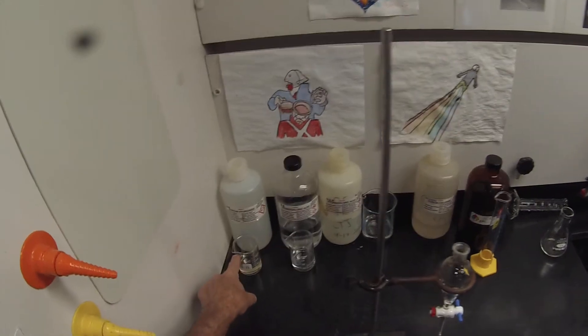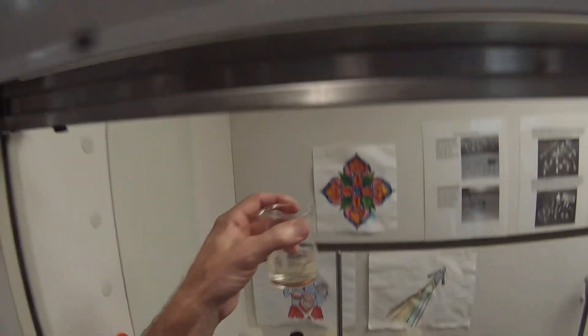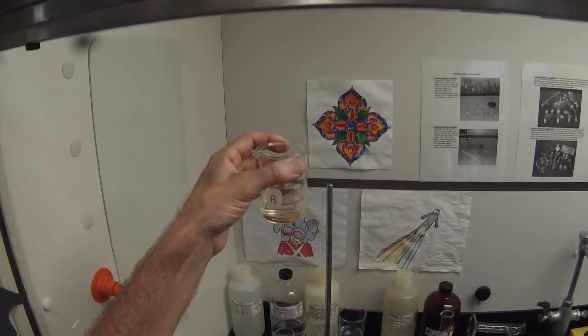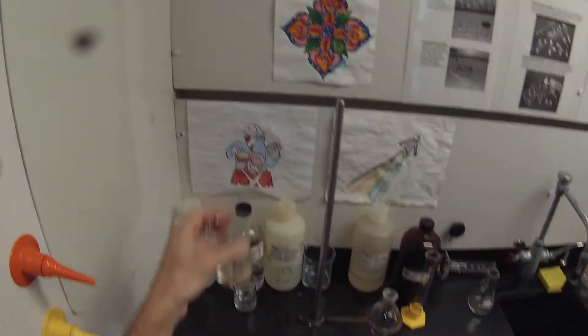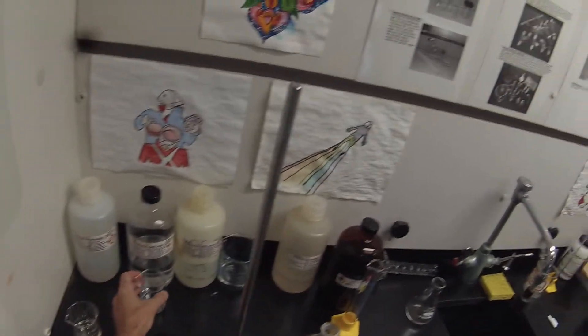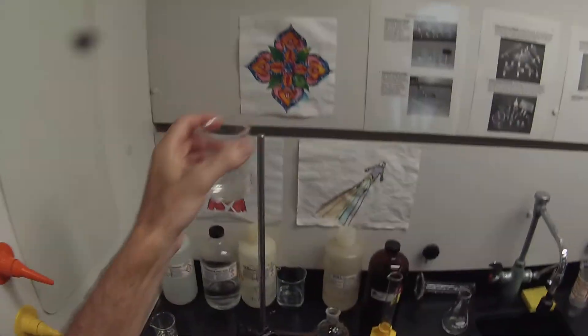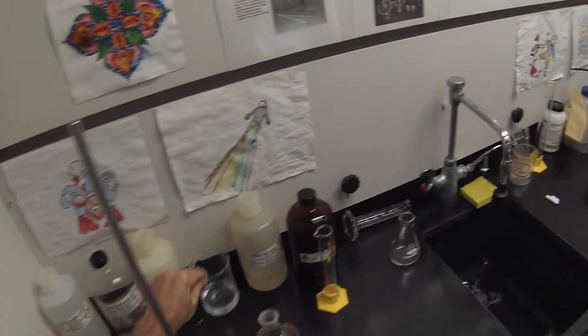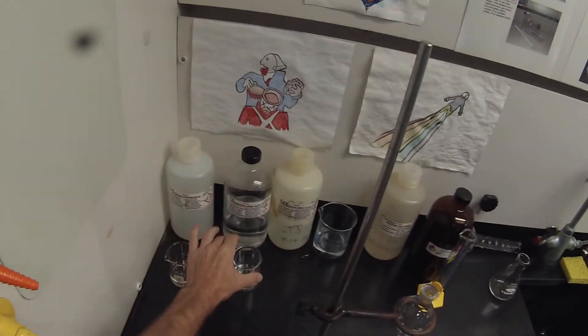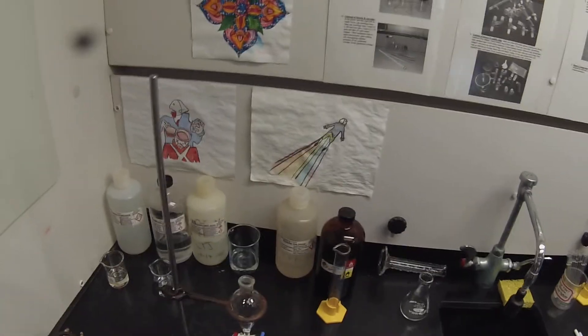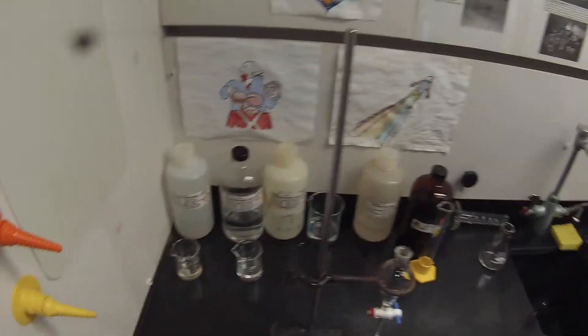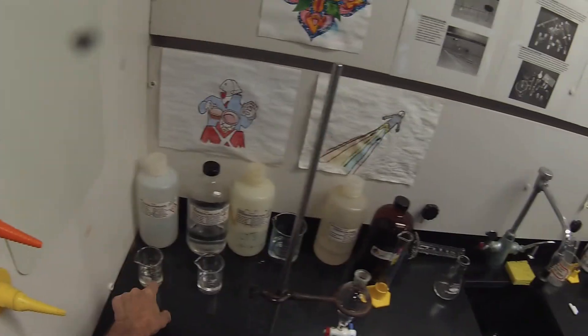We've done the extraction. We have our 30 milliliters of aqueous acid that we extracted with 0.5 molar hydrochloric acid, 2 by 15 milliliters. We've got our basic solution, 30 milliliters of the base that we extracted with the 5% sodium citrate solution. We're now going to neutralize the acidic solution with 6 molar sodium hydroxide, the basic solution with 6 molar hydrochloric acid, and then extract the cinnamic acid from this one and just filter that.